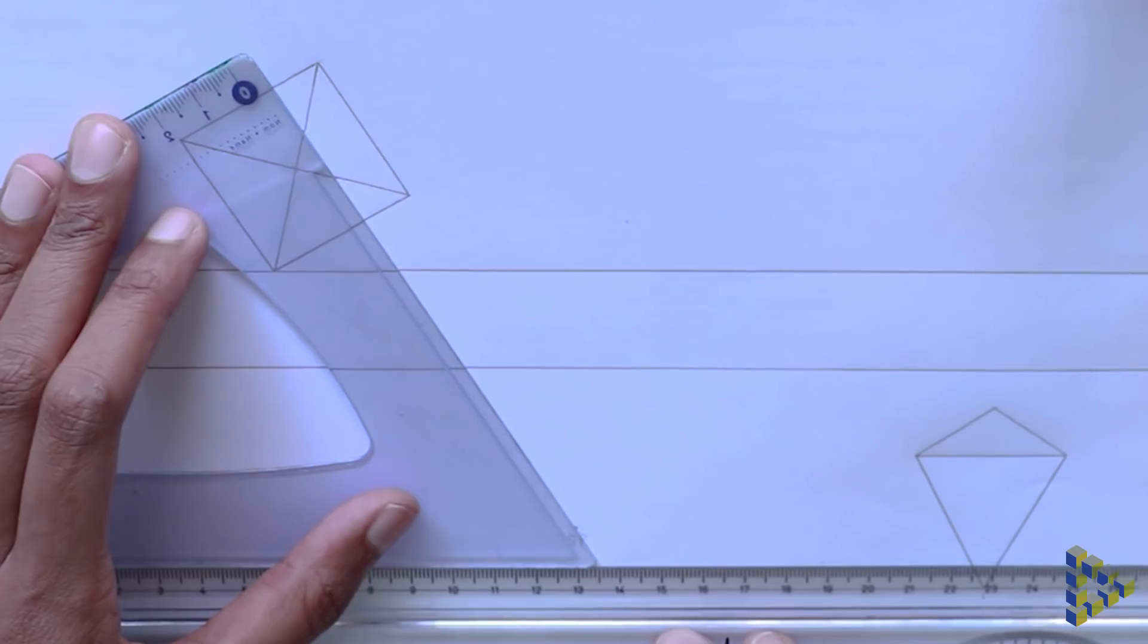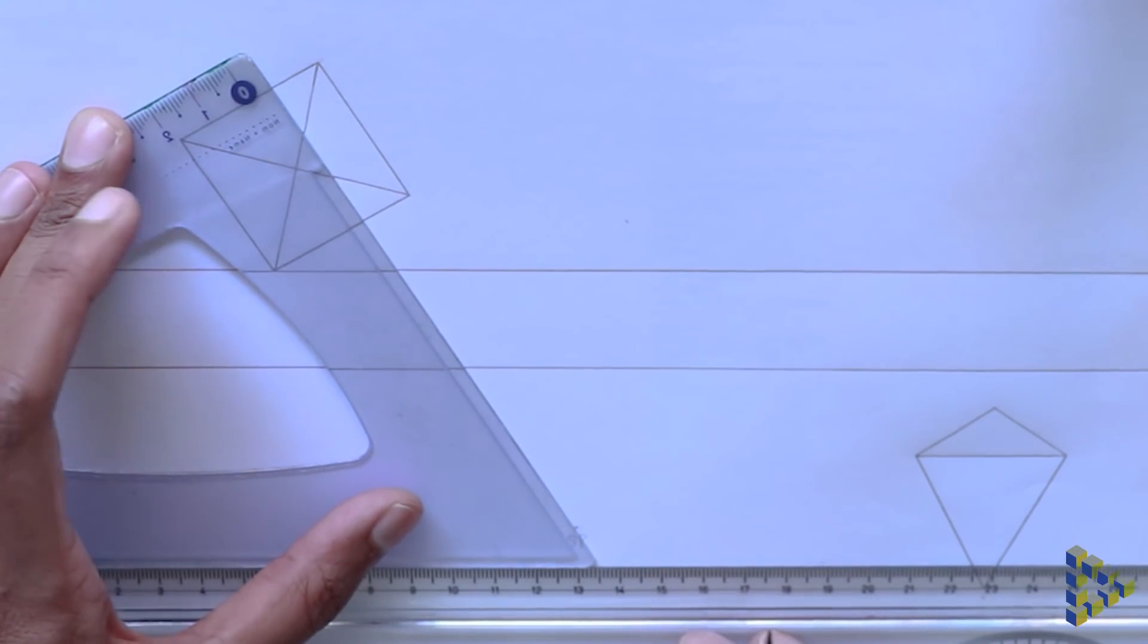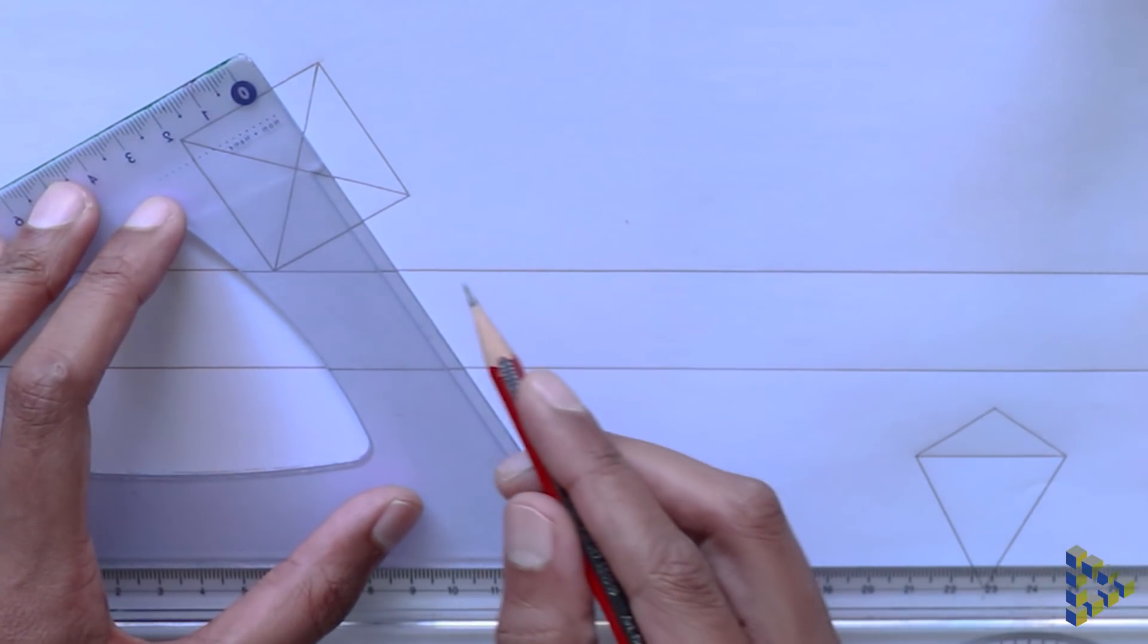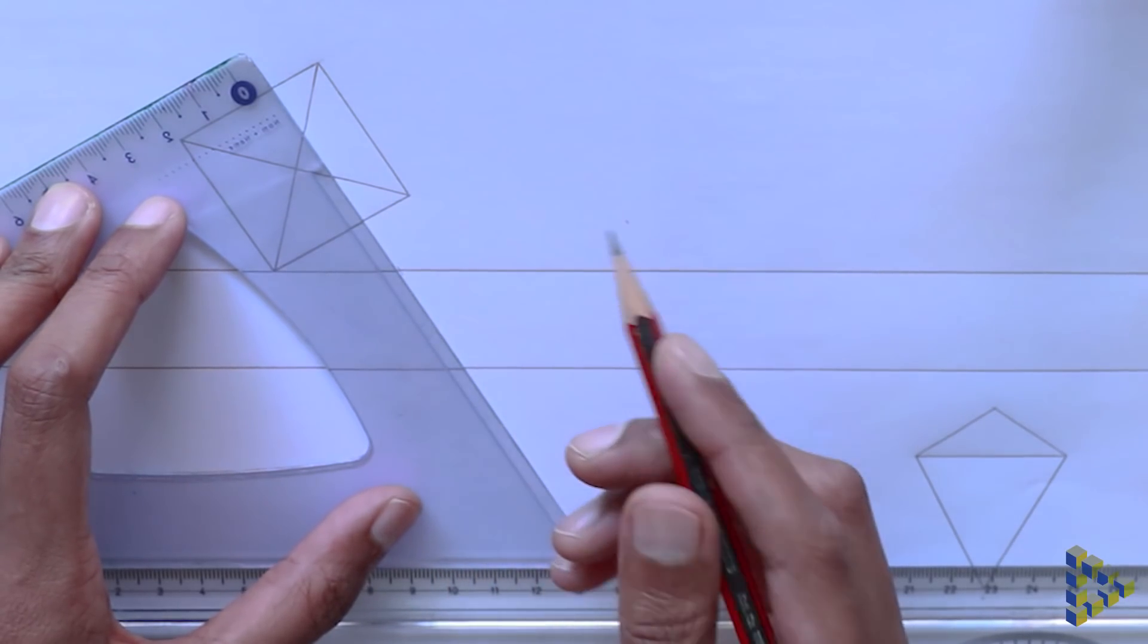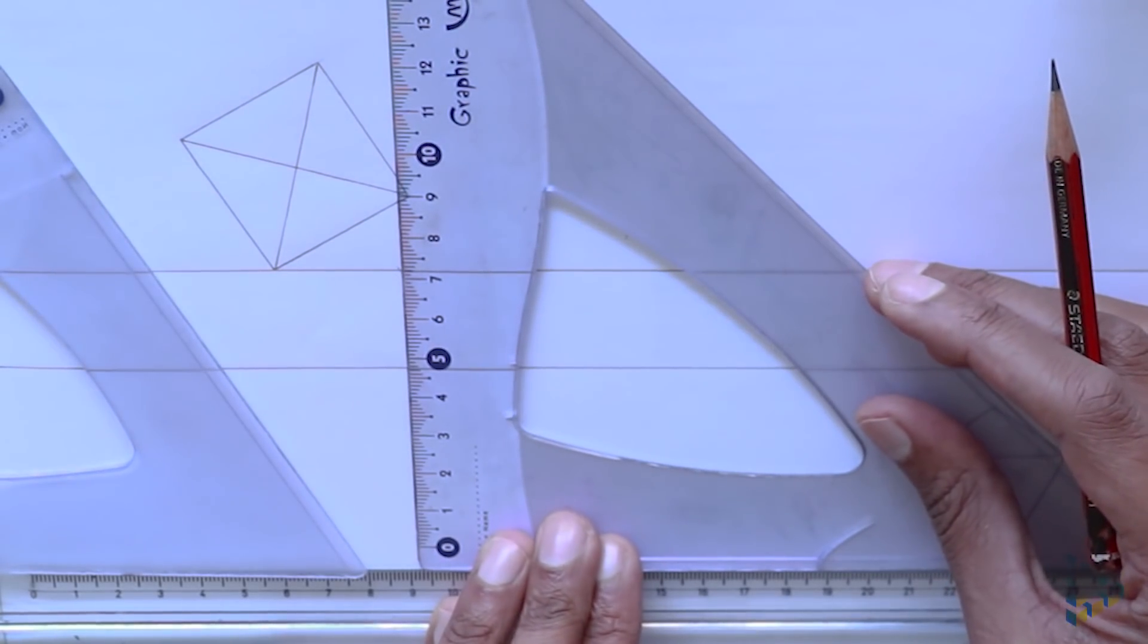Drag your set square across maintaining the 60 degree angle until you have a clear line from the picture plane to the station point. Make a mark on the picture plane and then bring down this point vertically.